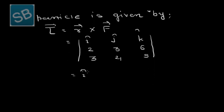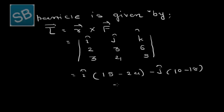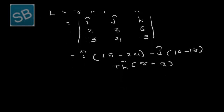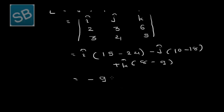Expanding: τ = î(3×5 − 6×4) − ĵ(2×5 − 6×3) + k̂(2×4 − 3×3), which equals î(15 − 24) − ĵ(10 − 18) + k̂(8 − 9). Simplifying: τ = −9î + 8ĵ − 1k̂.